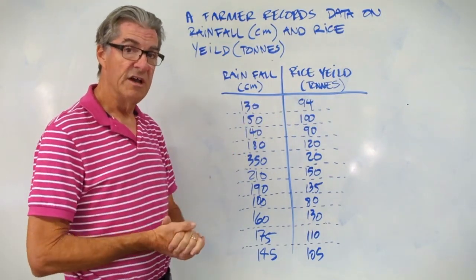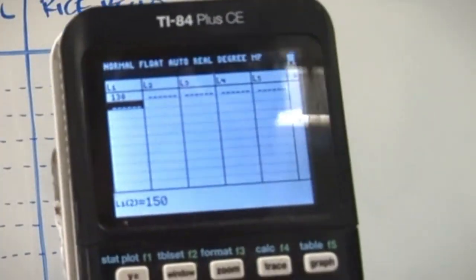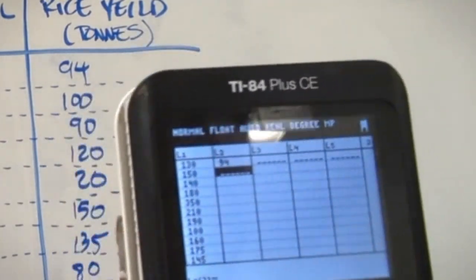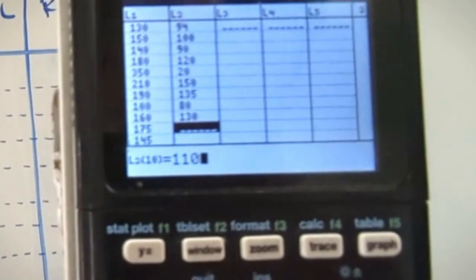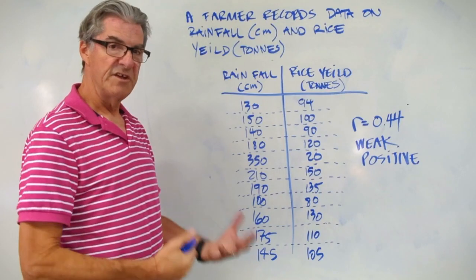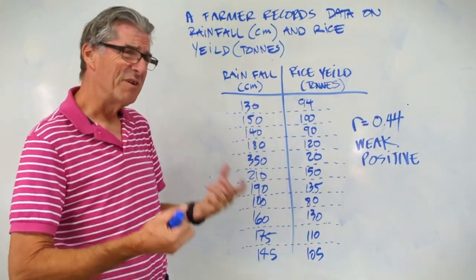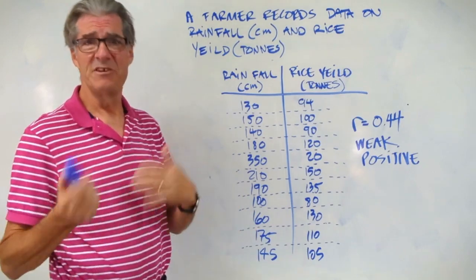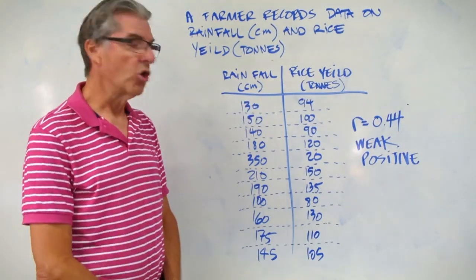Pause the video and use your calculator to find the R value for this data. When I do that calculation on my TI-84, I get an R value of 0.44, which is a weak positive correlation. So there is a positive correlation, but it's kind of weak. Probably there are a lot of other factors that influence yield — maybe good amount of fertilizer one year and not another, maybe the weather was cold one year and warm another. So rainfall alone is not a good predictor of rice yield.